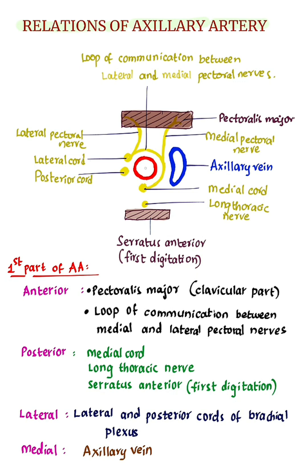Relations of the first part. Axillary vein lies medial to all parts of the axillary artery, so medially there is the axillary vein. Laterally, there are the lateral and posterior cords of the brachial plexus. Posteriorly, there is the medial cord, long thoracic nerve, and serratus anterior muscle.